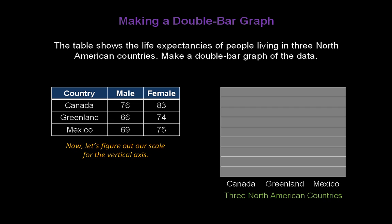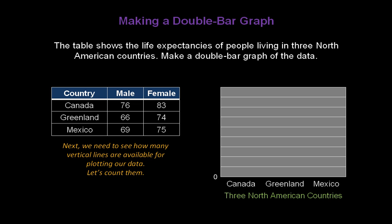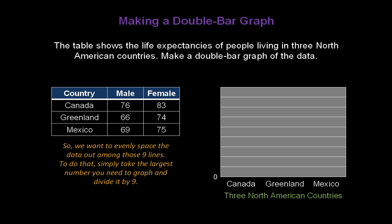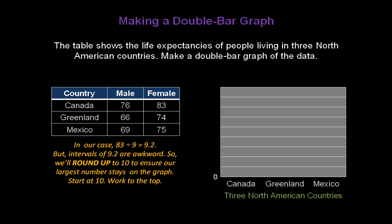Now let's figure out our scale for the vertical axis. We always start at zero, so let's add that at the bottom. Next, we need to see how many vertical lines are available for plotting our data — counting them, we have nine lines. So we want to evenly space the data out among those nine lines. We simply take the largest number we need to graph and divide it by nine. The largest number in our table is 83, so we divide that by nine and get 9.2. We're not going to use intervals of 9.2 because that's awkward, so we'll round up to 10 to ensure our largest number stays on the graph.